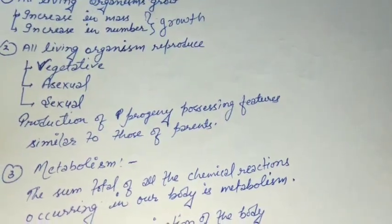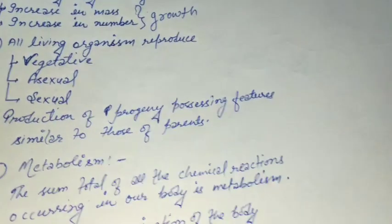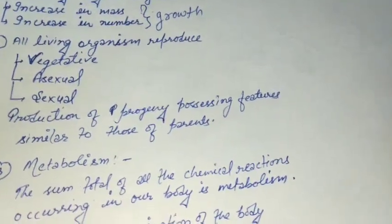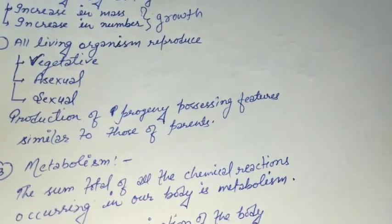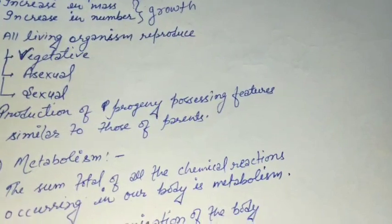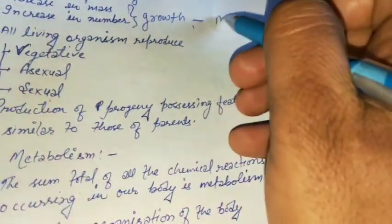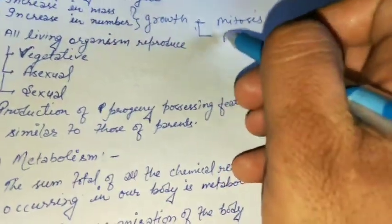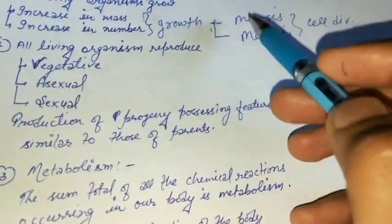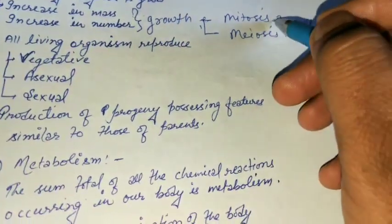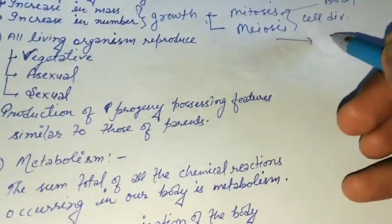In plants, growth occurs by cell division — plants can increase their number of cells, and animals can also increase their number of cells in their body. Cell division is mainly of two types: mitosis and meiosis.